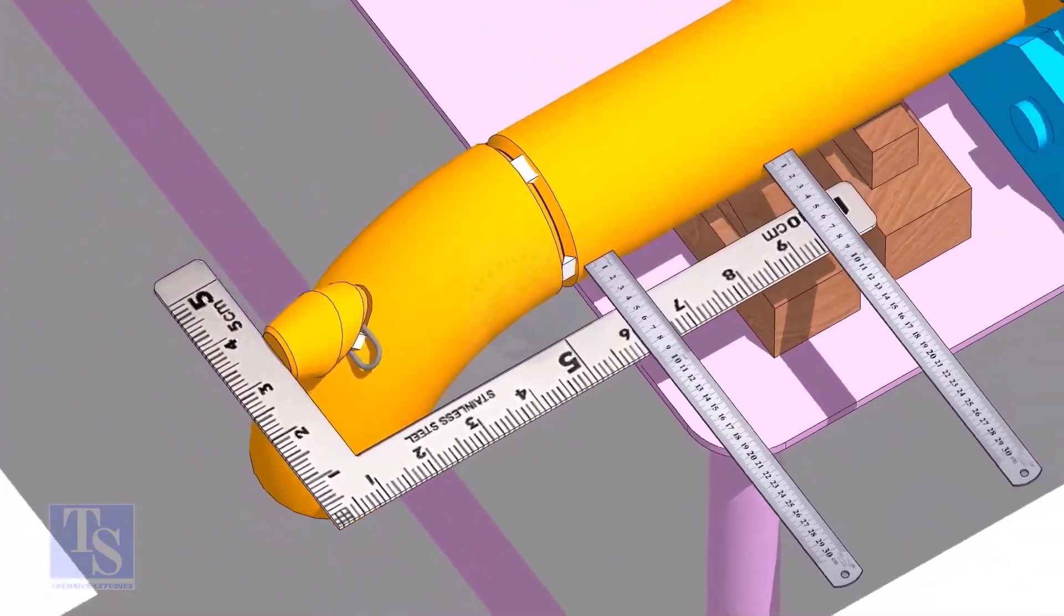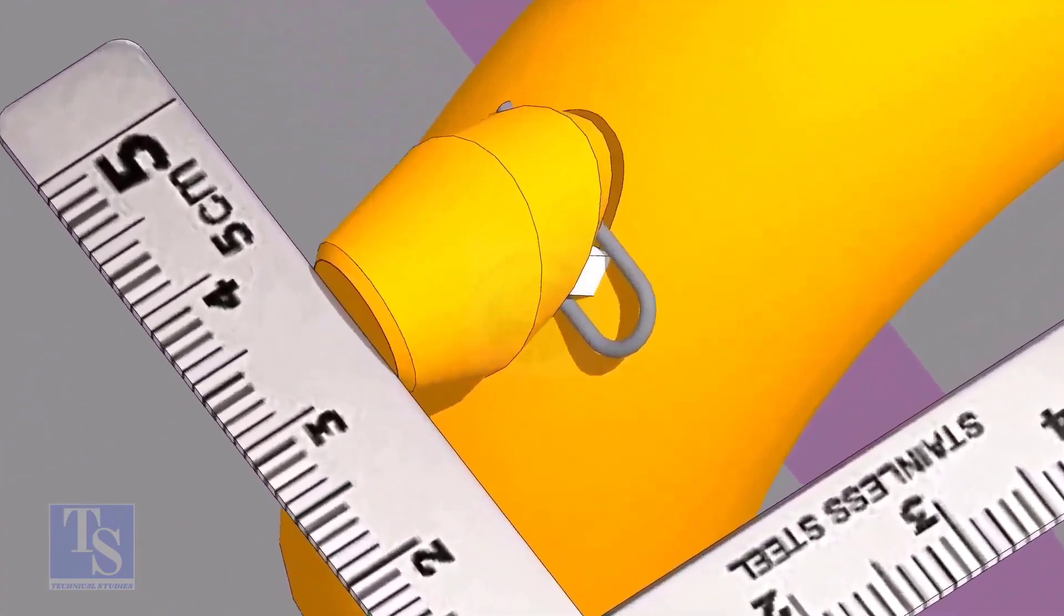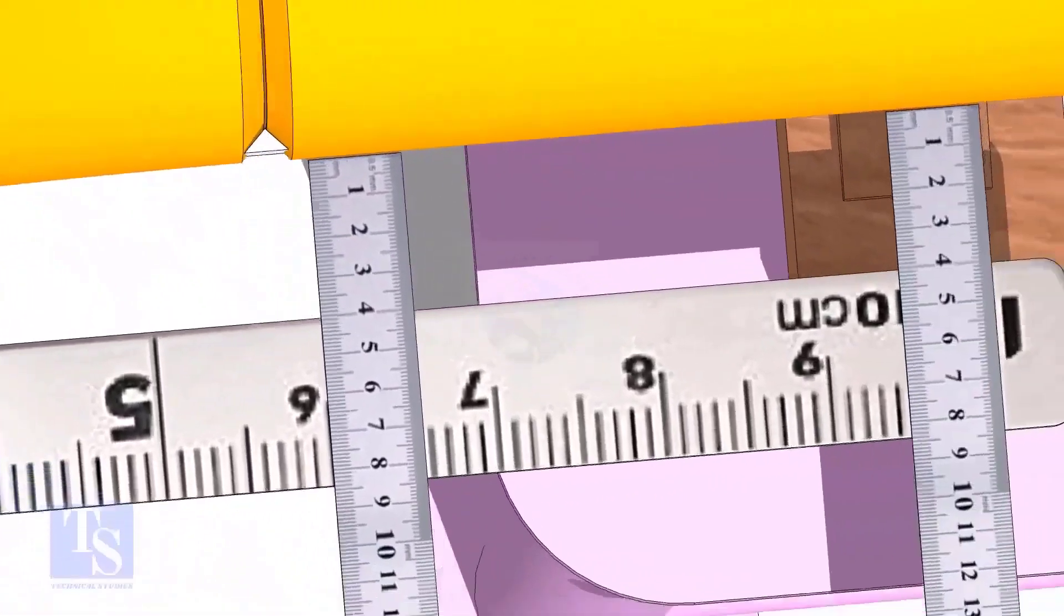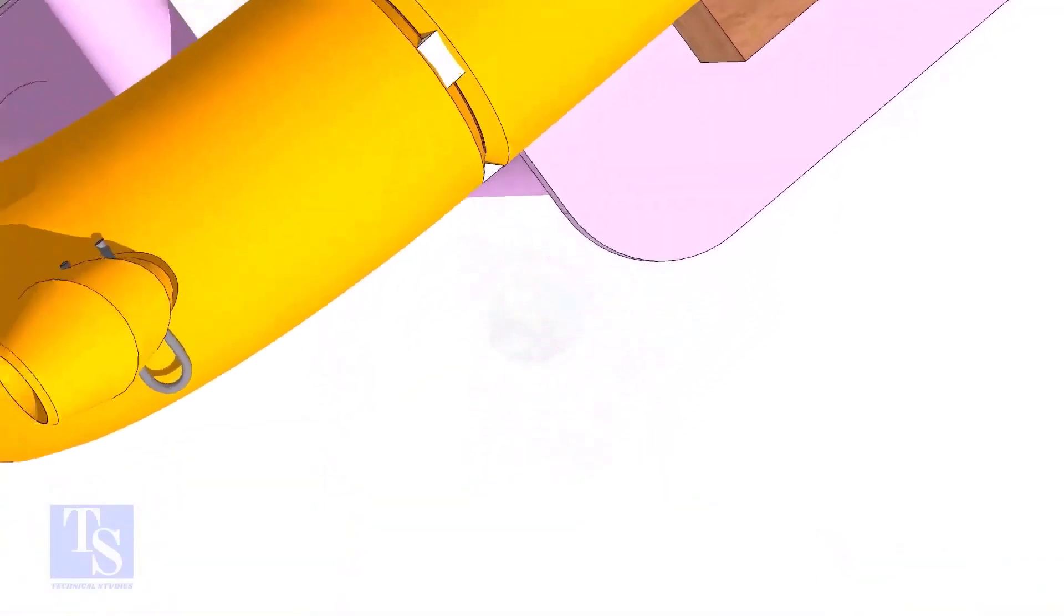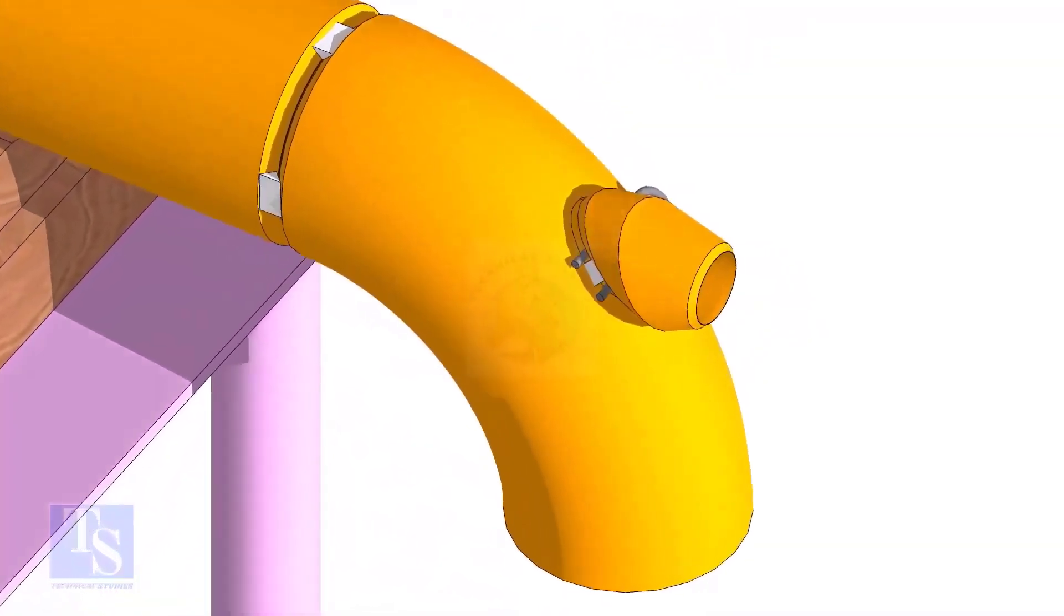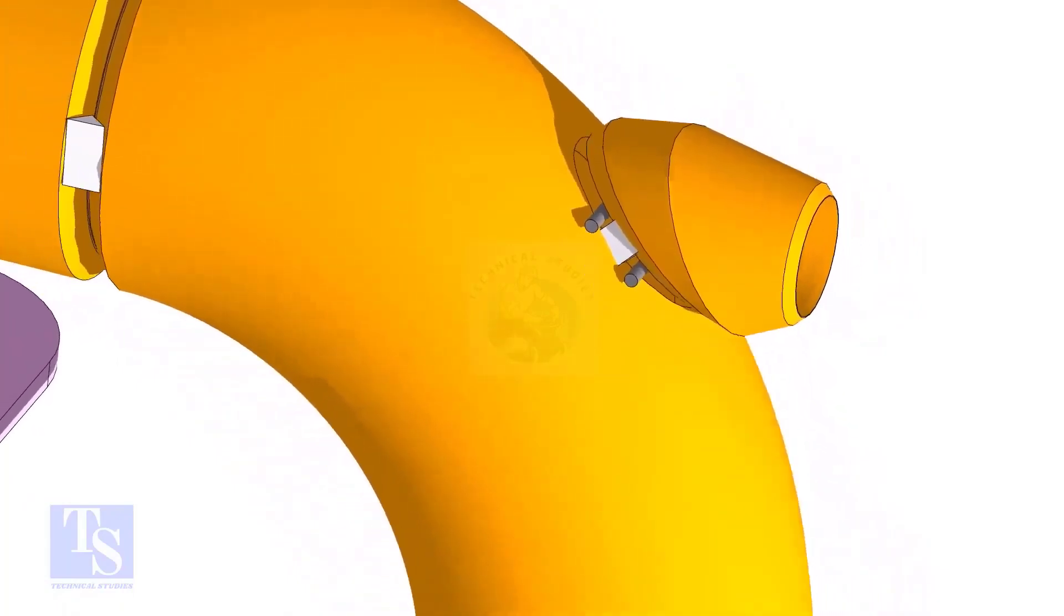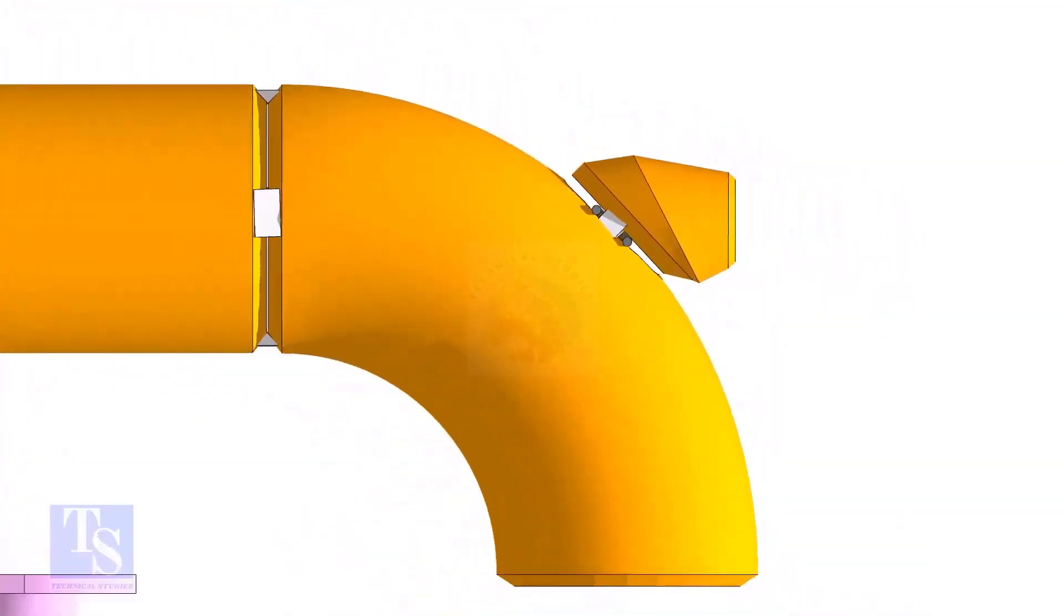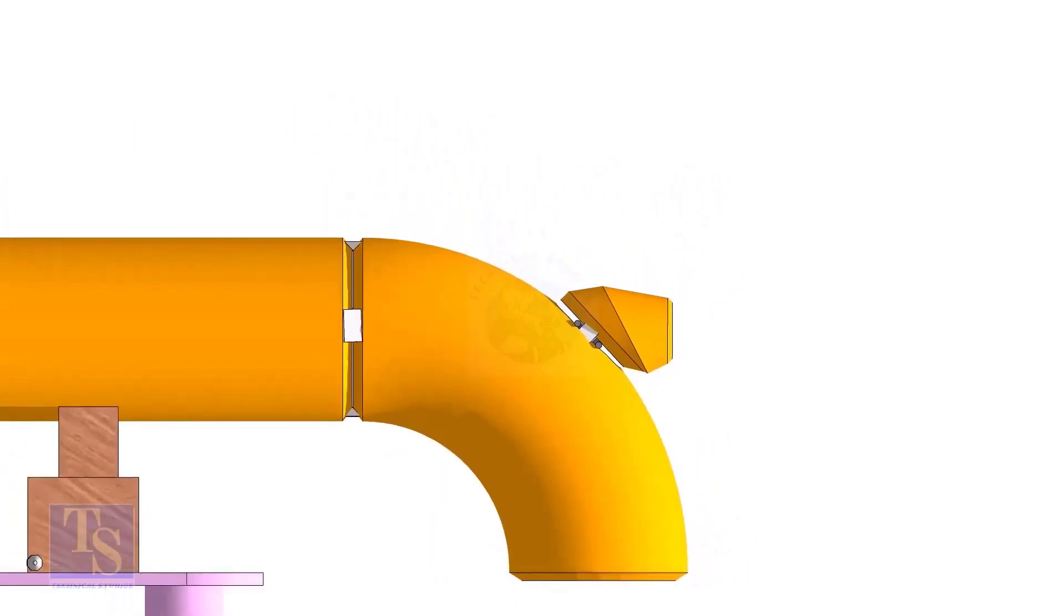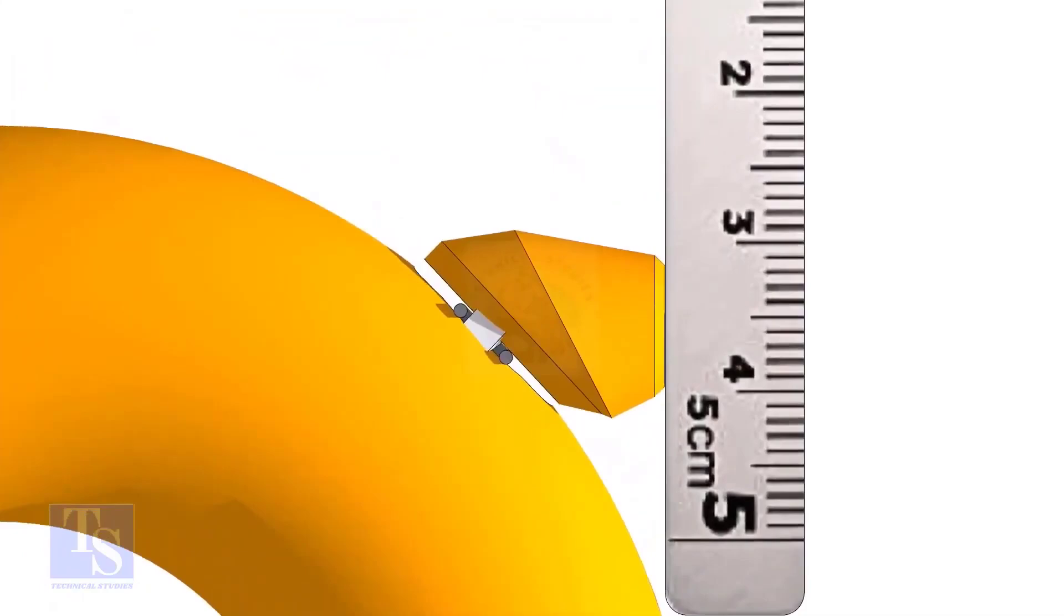Make the elbowlet face square to the side of the pipe. Tack weld on the opposite side. Maintain the vertical squareness and tack weld on the top and bottom side of the elbowlet.